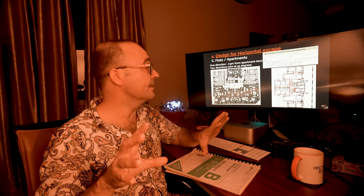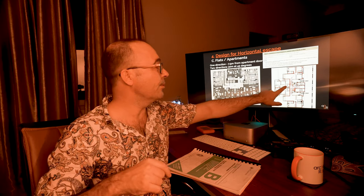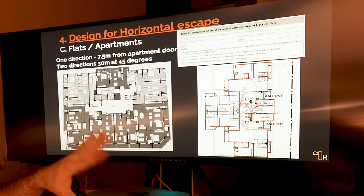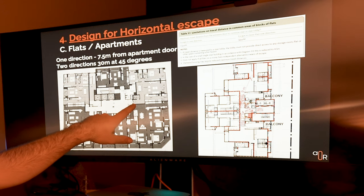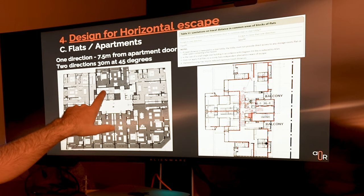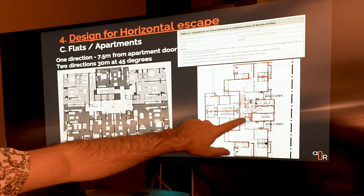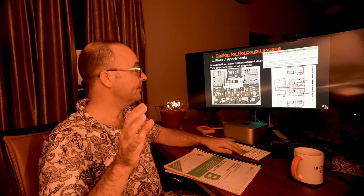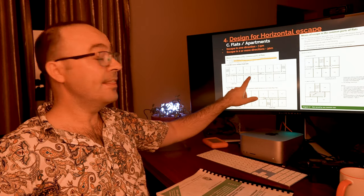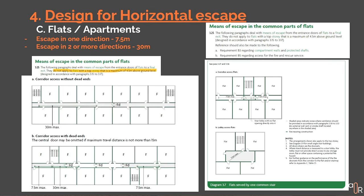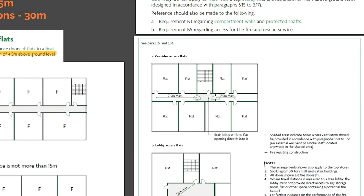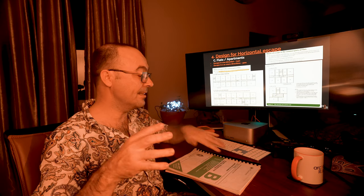For flats and apartments, from the actual apartment door to the fire escape it should be no more than 7.5 meters. So if you've got the front of an apartment here, it's no more than 7.5 meters to that escape stair. Now if you've got two directions — more than one fire escape in the apartment building — you can put them on either side and that can go up to 30 meters. So for apartment buildings, you can go up to 30 meters if you've got a point of choice. With one stair it's only 7.5 meters.